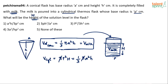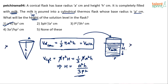Solving for h, we get h = a²h / 3p², which is option number one. Remember, in the exam you don't need to draw diagrams or write out all these equations. Simply take the volume of the cone — (1/3)πa²h — equate it to the volume of the cylinder — πp²h — and solve for the height of the cylinder. As simple as that.